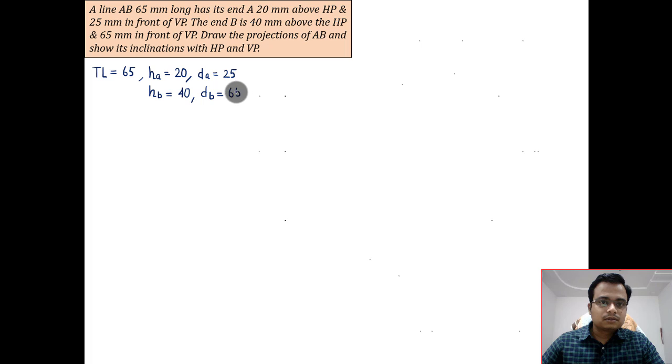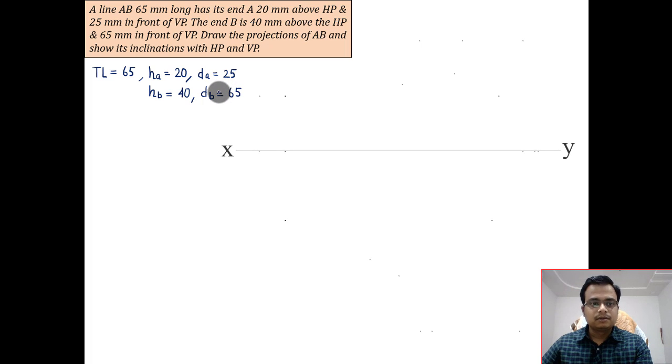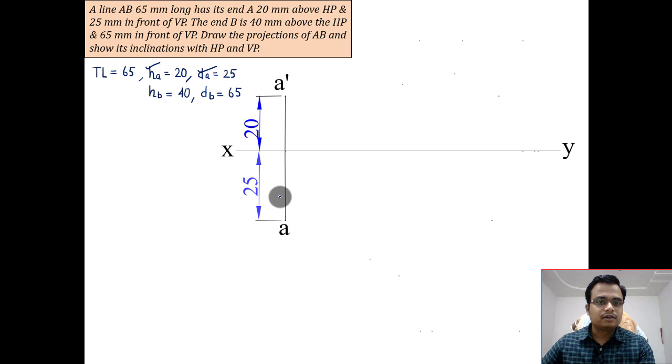DB is equal to 65. So what we do here - let's draw the reference line for point A. Let's use H above and D below. H above 20 and D below that is 25. Now we need to precisely locate B dash or B1 dash.